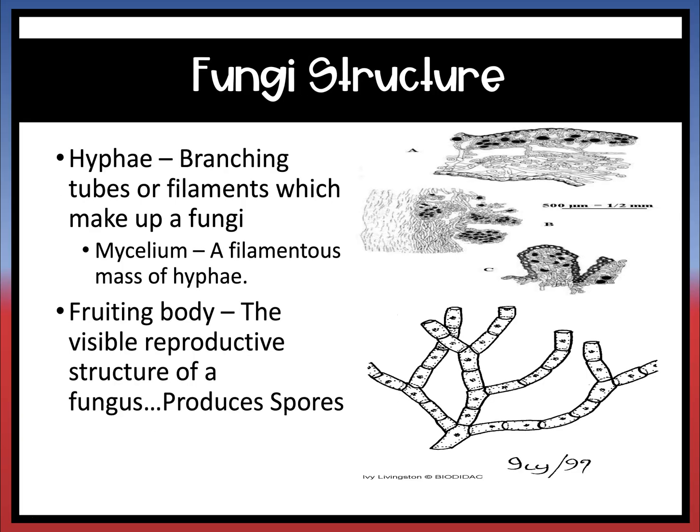There are three main components of fungi structure. The first is the hyphae, which are the branching tubes or filaments that make it up. The next part is the mycelium, which is a mass of that hyphae. And then you have the fruiting body, which is the actual visible structure that helps with reproduction and helps spread and produce the spores.